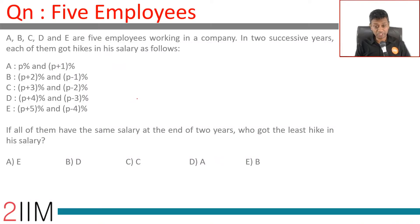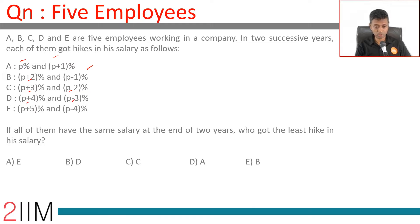Five employees A, B, C, D, and E are working in a company. In two successive years, each of them got hikes in salary as follows: A gets p% and p+1%, B gets p+2% and p-1%, C gets p+3% and p-2%, D gets p+4% and p-3%, and E gets p+5% and p-4%.